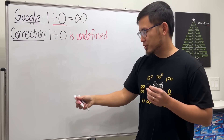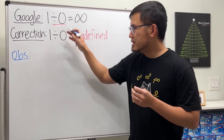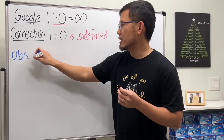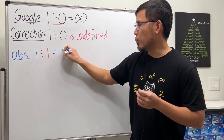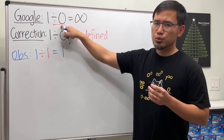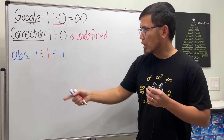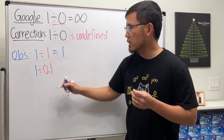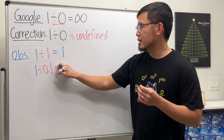Since we cannot divide by zero, let's make some observations instead of just giving up. Let's start with one divided by one — the answer is just one. But now we want to get closer to zero, so let's make the denominator smaller. How about one divided by 0.1? If you work this out, you get 10.